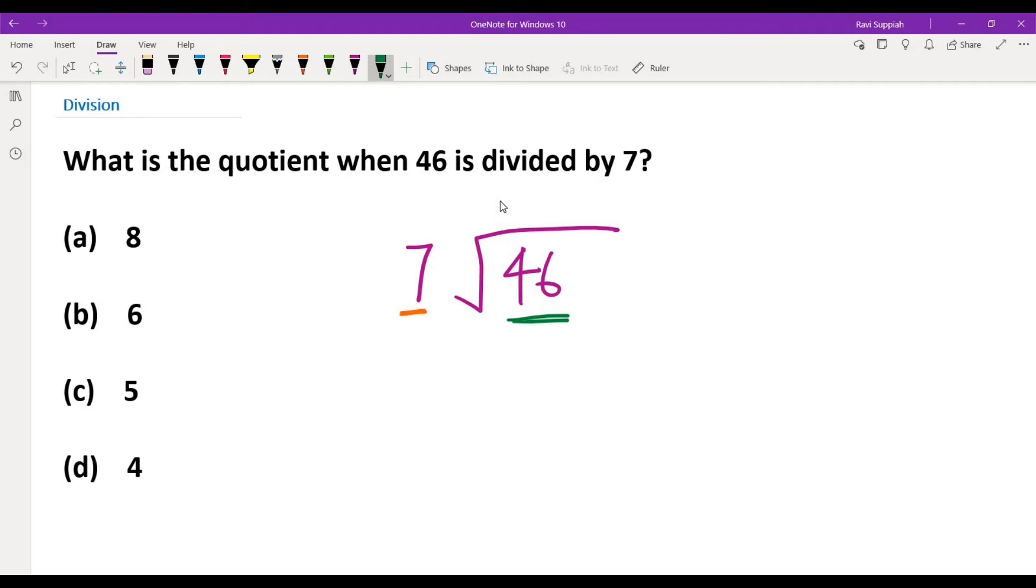So now that we know that 7 is smaller than 46, we now need to look back at the 7 times table and see if we can find a number that when multiplied by 7 will give us 46.